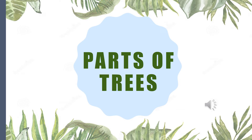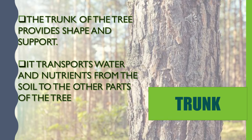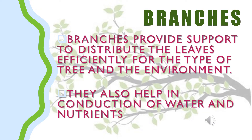We learned that there are various parts of a plant in our earlier class. Similarly, there are various parts of a tree, and we will learn about them in this section. The first part is called the trunk. The trunk of the tree provides shape and support, and it transports water and nutrients from the soil to the other parts of the tree. Branch is another part of a tree. Branches provide support to distribute the leaves efficiently, and they also help in conduction of water and nutrients.